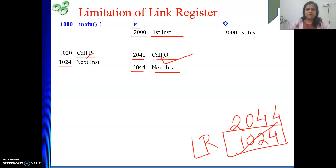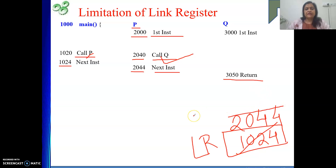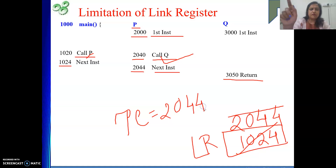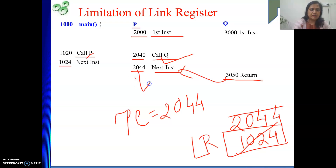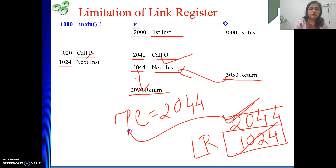After that, PC will be loaded with the address of Q, let's say 3000, so Q will start at 3000 and continue. Now at some point we return from Q. On return, the value of the link register is given to PC. So PC will take the value 2044 — good, we come back to the instruction after the call Q inside function P. We continue the next part of function P.